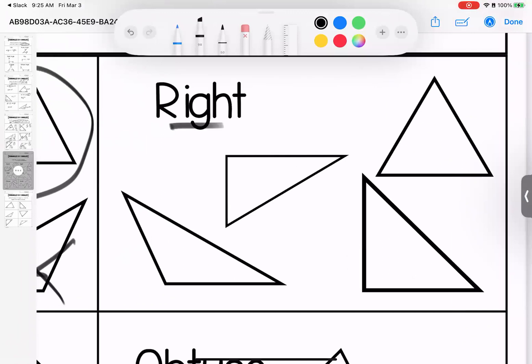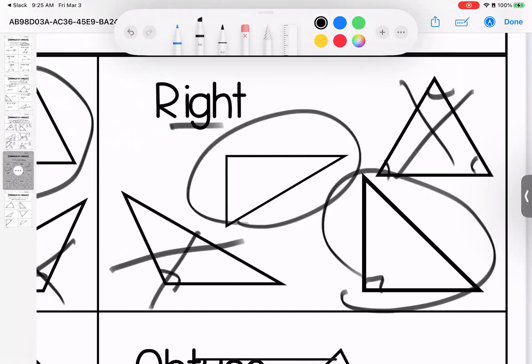I'm looking for right. This is obtuse. These are acute. Both of these are right. Specifically, those angles.